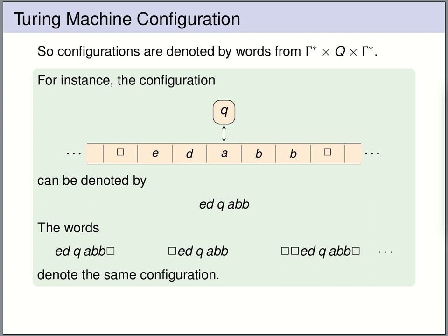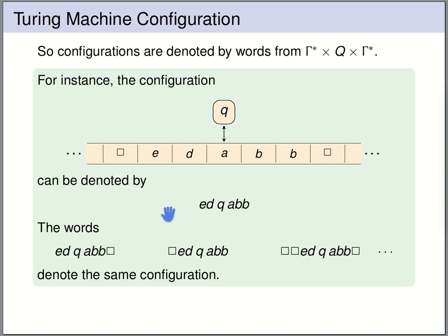Configurations of Turing machines are denoted by finite words of the form: some word over the tape alphabet, followed by a state, followed by a word over the tape alphabet. For instance, a configuration where the machine is in state q reading the letter a, with 'de' to the left and 'bb' to the right, is denoted by the finite word: de q a bb — so the state q appears just before the symbol currently being read.